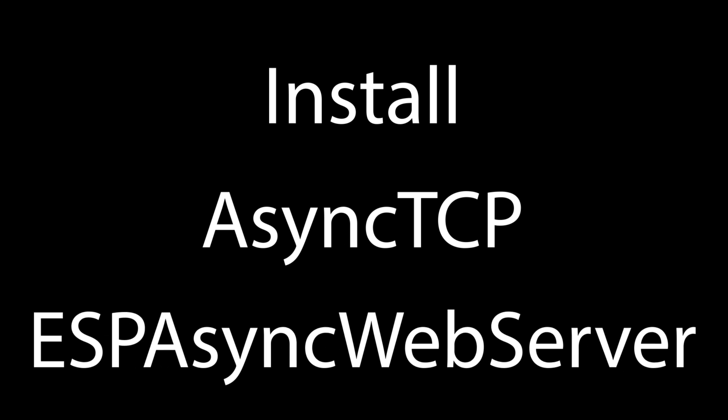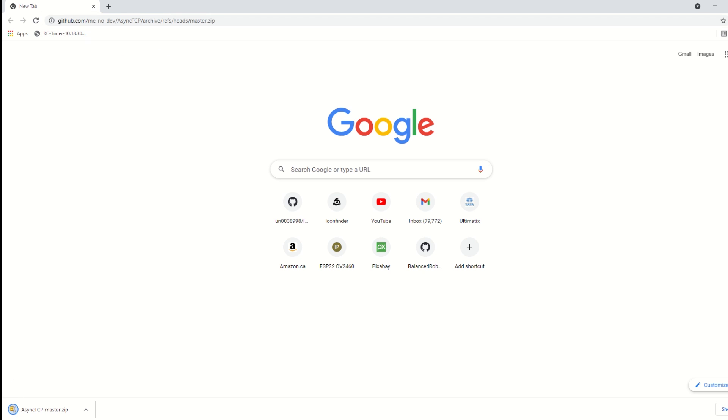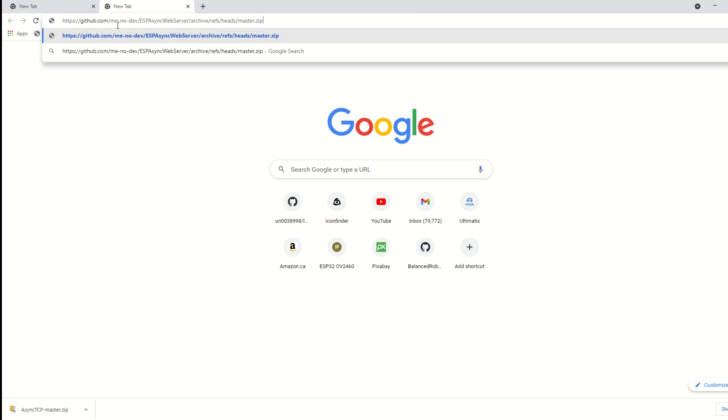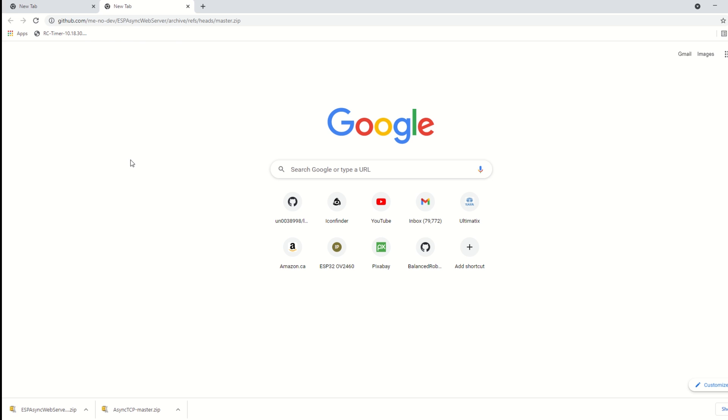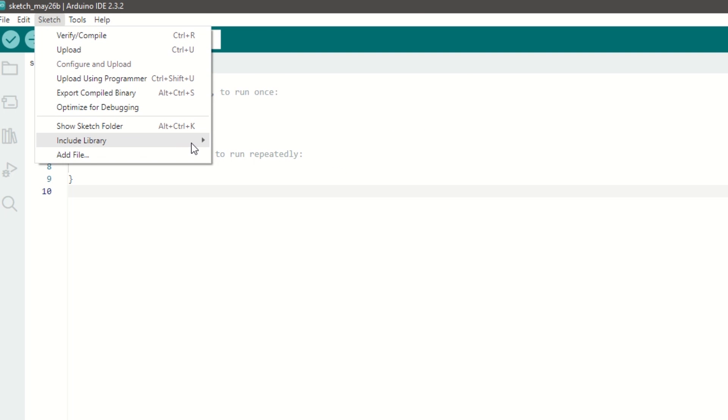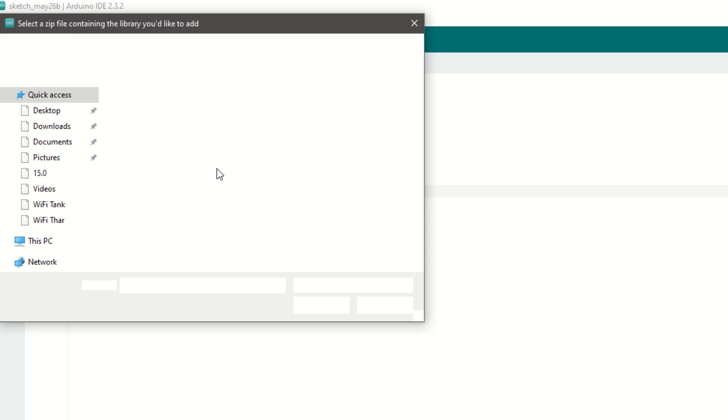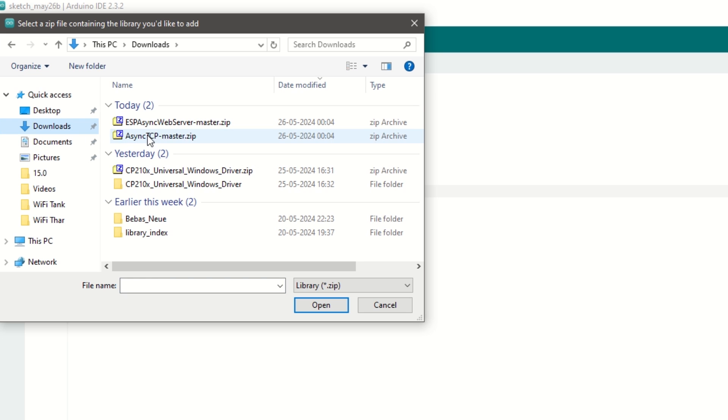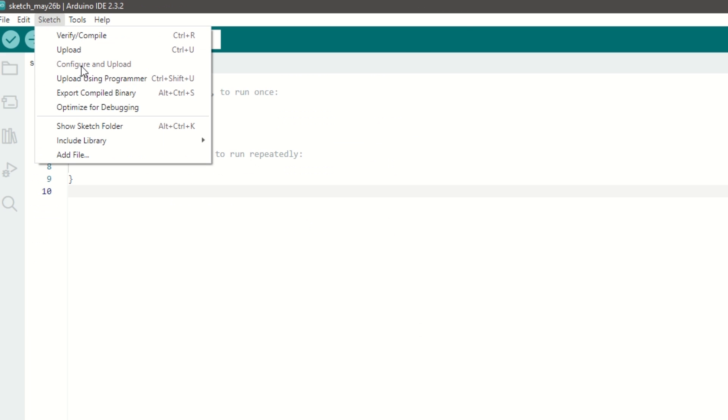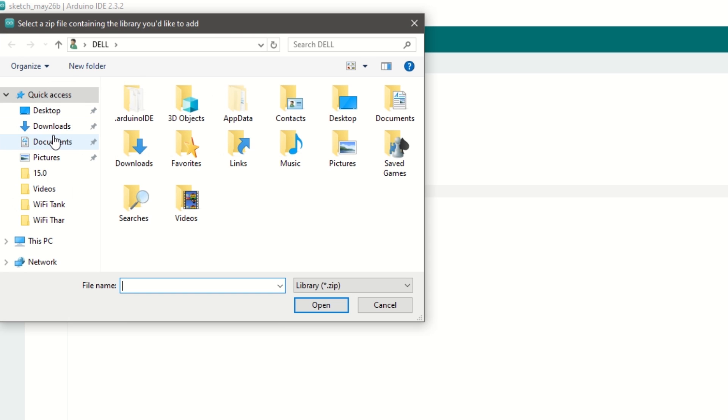After that we need to install the Async TCP and Async Web Server library. Download these libraries from the links provided in the description below. Once downloaded, go to Sketch, Include Library, and then click on Add ZIP File. Select the downloaded zip library file and click Add. Similarly, add the Async Web Server library as well.